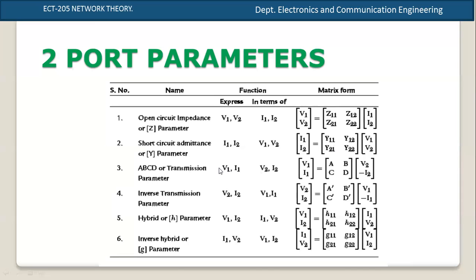The ABCD parameter expresses V1 and I1 — that is, the input port voltage — in terms of output voltage and current. V1 is equal to A·V2 minus B·I2, and I1 is equal to C·V2 minus D·I2.